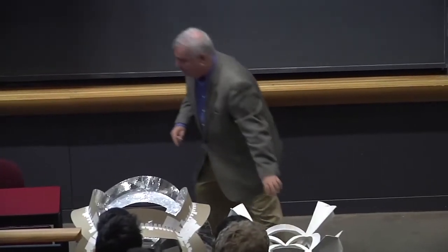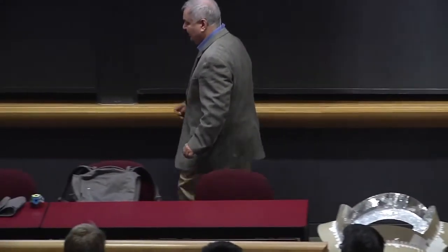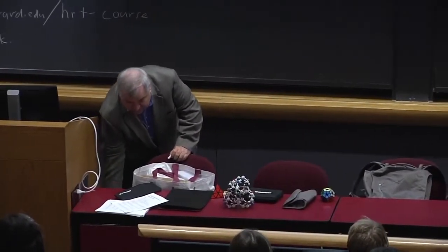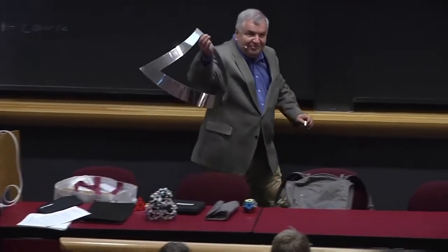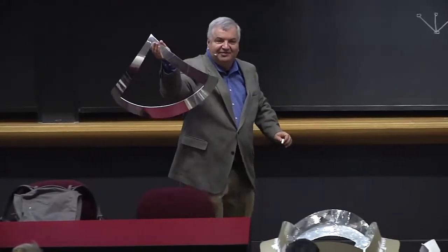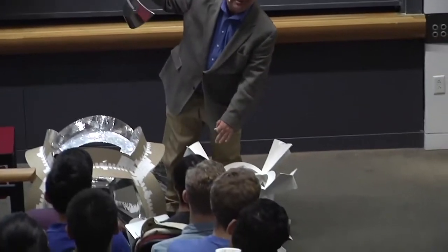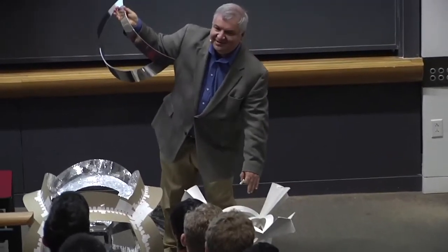So this is what's called the root system of type D4. And I couldn't bring the whole sculpture, so I brought the model, but I also brought just for figuring out the scale of the thing and the way it's built, one triangle of it. It's one of these triangles that you see here.